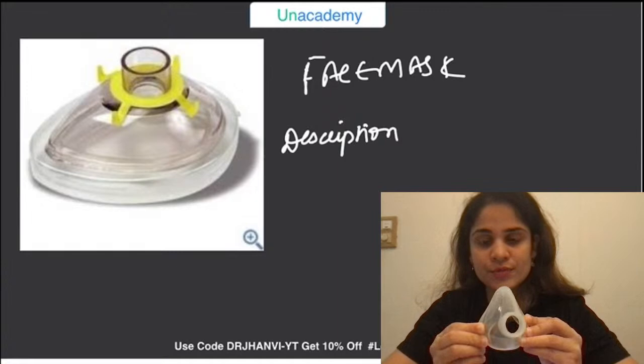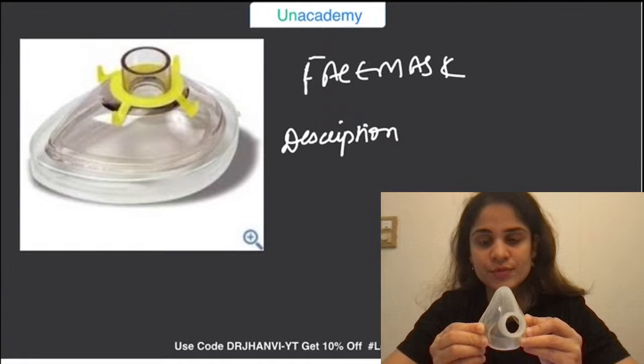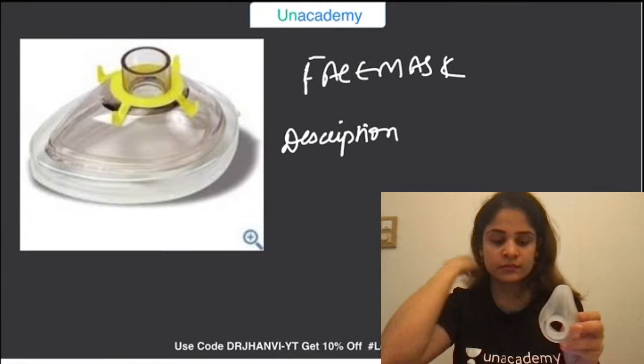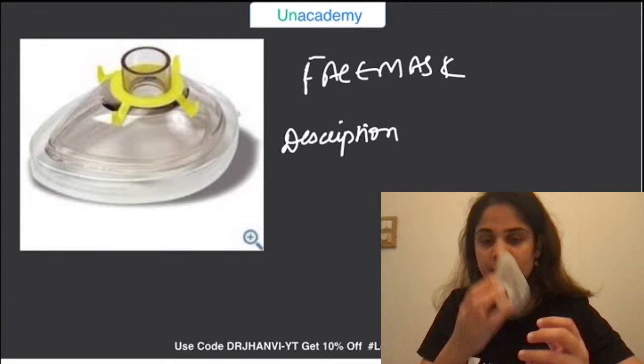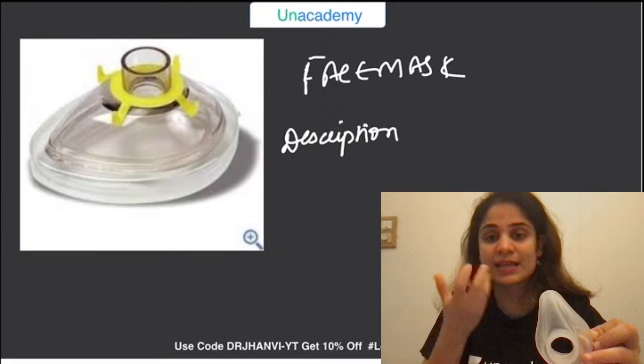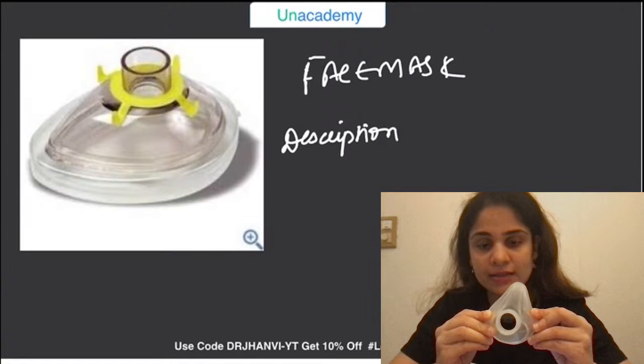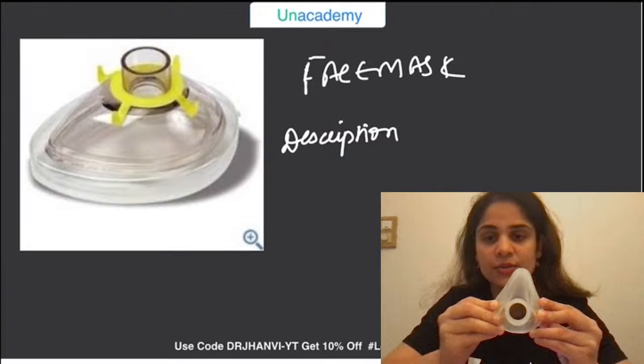Why are we stressing on the transparent face mask? Because when you hold it onto a patient to ventilate him, if there are any vomits, secretions, or blood coming out of the patient's face, you will be able to see it through the transparent part. If you cannot see it, the patient may aspirate those secretions. So it is very important to see and suction out blood, secretions, or vomitus whenever visible.